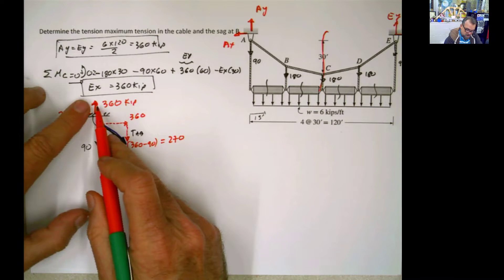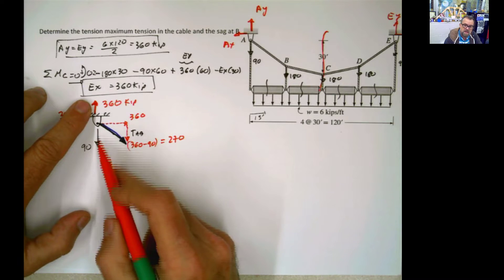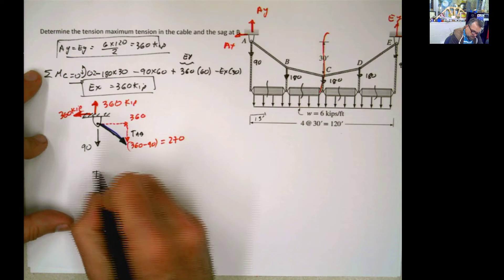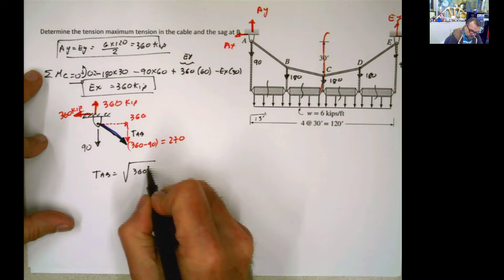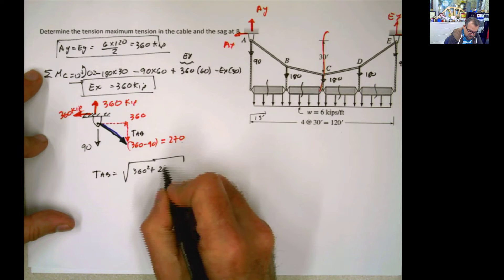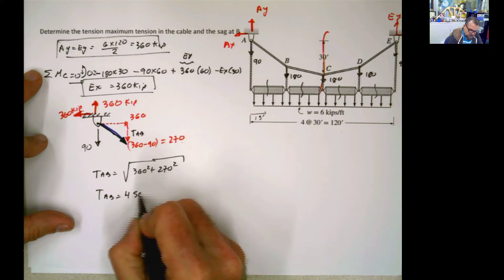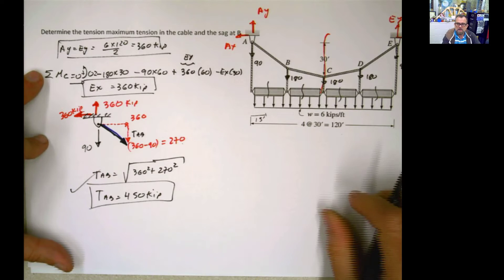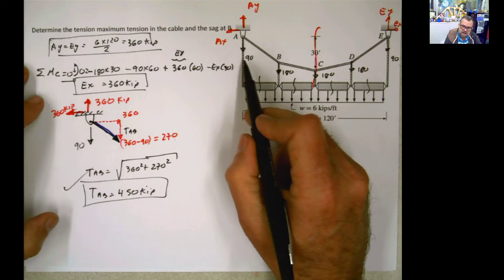So those are the two components of the TAB. This is not the vertical component of this, because the support has another force hanging directly from it. So the tension AB is just going to be the square root of 360 squared plus 270 squared. And the tension AB then is going to be 450 kip. This problem, almost everyone has it wrong.